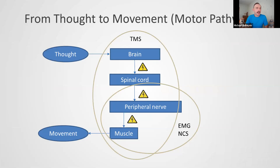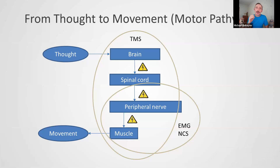Let's talk about the paradigm from thought to movement — the motor pathway. Our brain contains a lot of small cells, neurons, that are connected to each other with small links. Small electrical currents flow from cell to cell; they are chaotic, but if you have a thought to move a limb, they become arranged. The electrical signal goes from the brain through the spinal cord, through the peripheral nerve to the muscle, the muscle contracts, and we see movement.